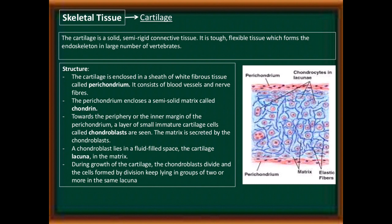Today we will start another connective tissue — skeletal tissue: cartilage. Cartilage is a solid, semi-rigid connective tissue. It is tough and flexible tissue which forms the endoskeleton in a large number of vertebrates. The cartilage is enclosed in a sheath of white fibrous tissue called the perichondrium, which consists of blood vessels and nerve fibers.